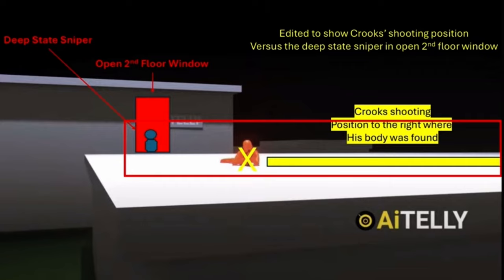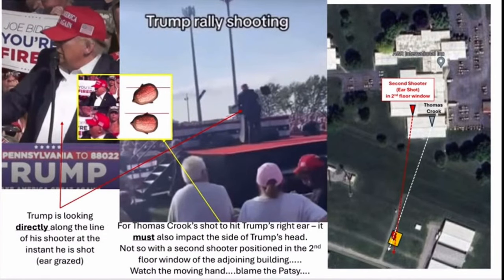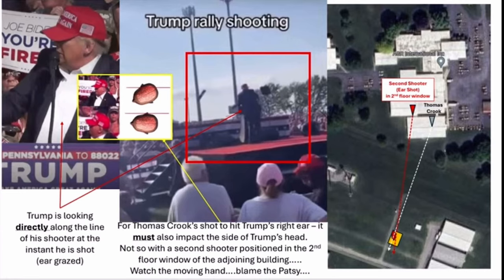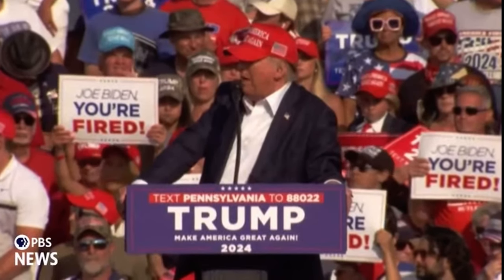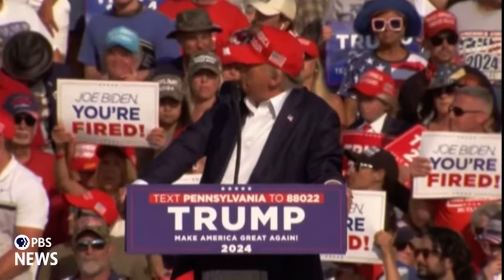The final slide shows a composite of different pictures, including an image of Trump from behind. Looking at the bill of his cap at the moment he was shot — captured from video taken from behind him — it's pointing directly at the position of the sniper that grazed his ear. He had just barely turned his attention to the teleprompter and away from the jumbotron. That little movement of his head saved his life.